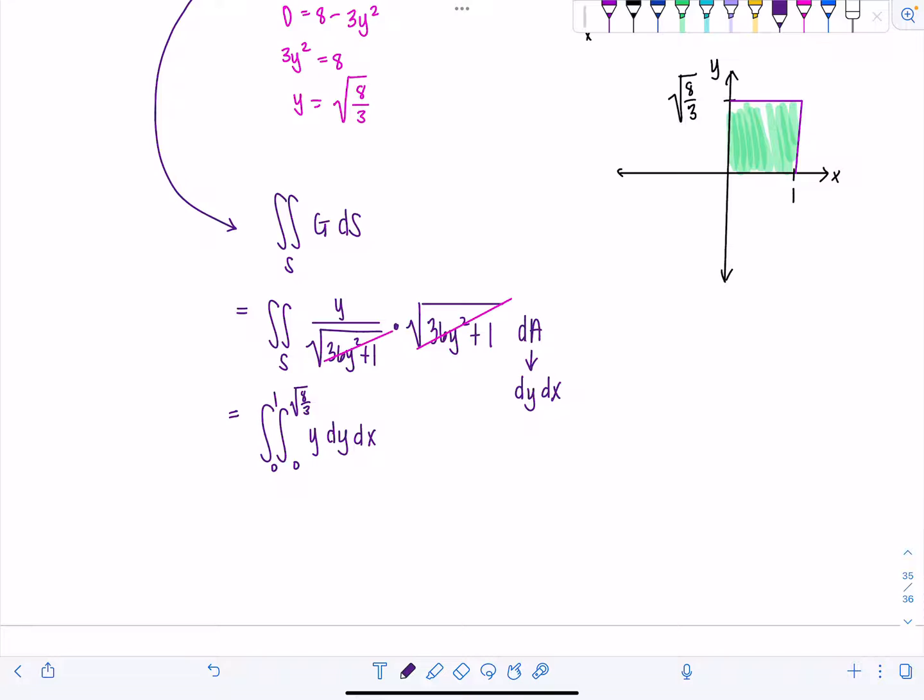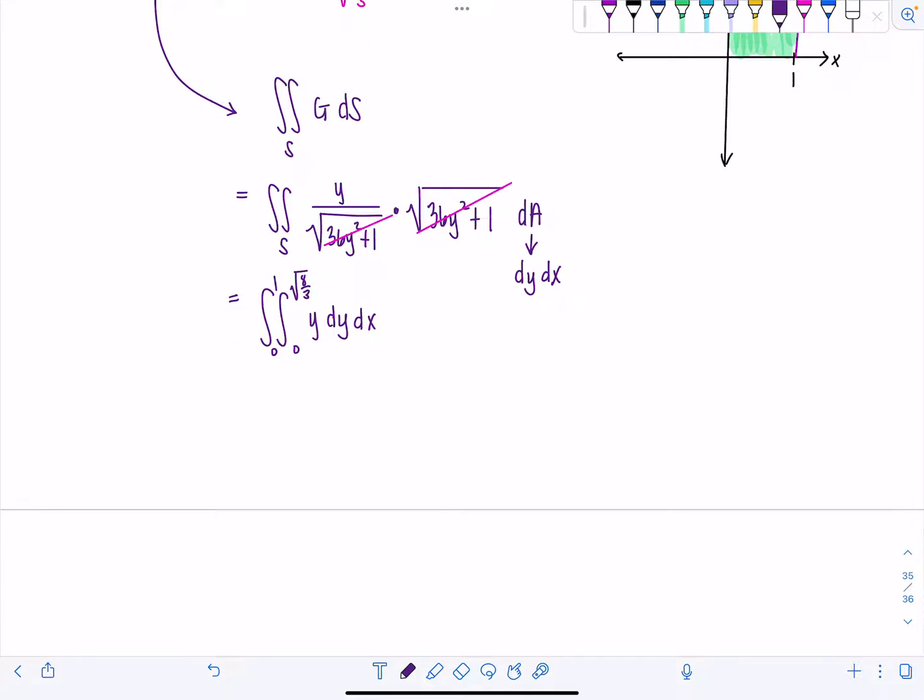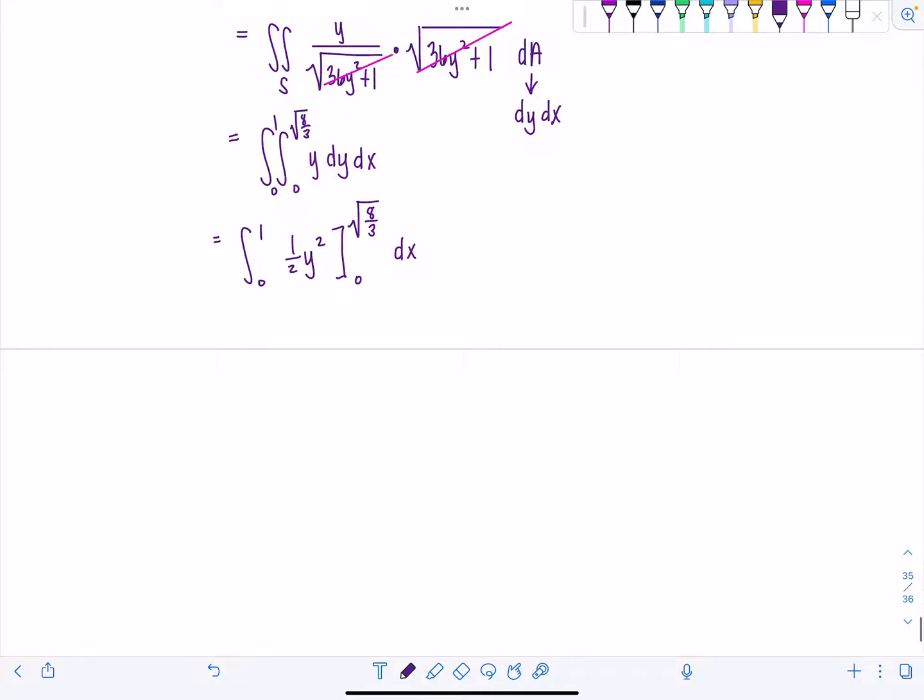So first, let's see. Antiderivative of Y, that's just going to be 1 half Y squared. And then we still have this integral from 0 to 1 out here. 1 half Y squared, 0 to the square root of 8 thirds, dx. Aren't we glad I didn't bother rationalizing or messing with that? So then we have integral 0 to 1, 1 half. Evaluating the limits of integration, the square root of 8 thirds squared is just 8 thirds minus 0, the lower limit, dx. And then this is just integral 0 to 1, 4 thirds dx. So that's just going to be 4 thirds X from 0 to 1, which is 4 thirds.